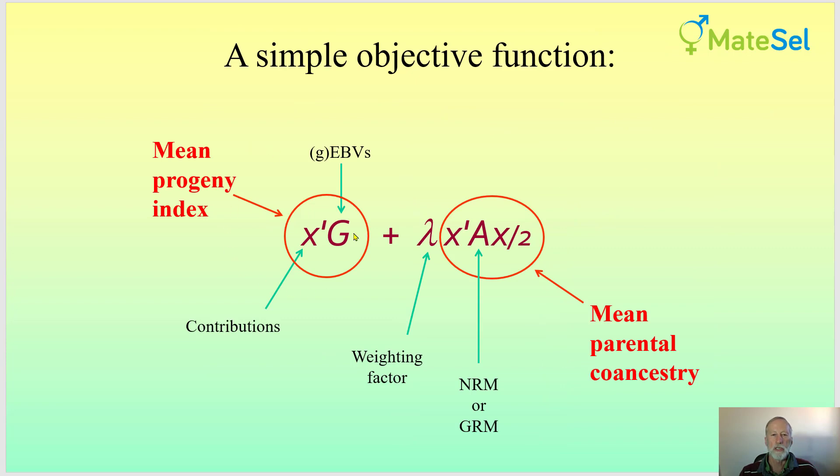Here, mean progeny index is predicted in this way. So we want to push this one upwards for genetic gain, whereas mean parental co-ancestry, we want to reduce this one. x'Ax over 2, A is the numerator relationship matrix or the genomic relationship matrix.